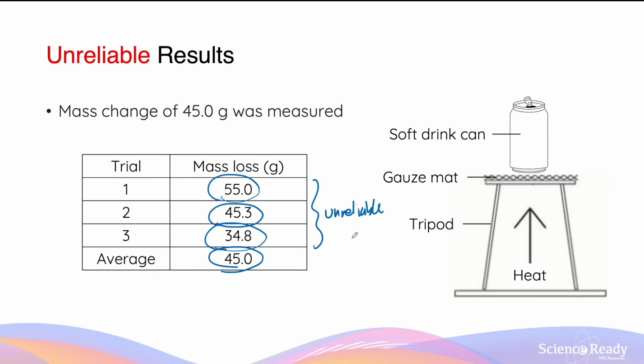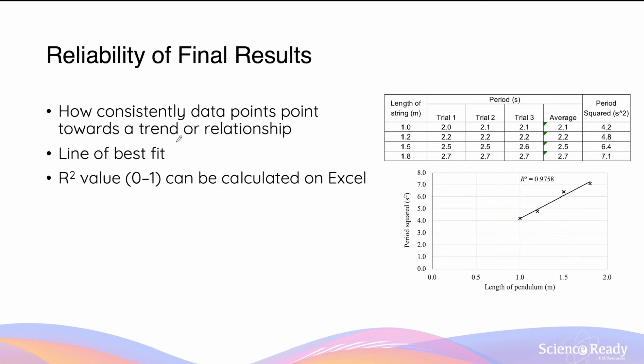This brings me to the point that when you repeat an experiment and find the average value, that does not mean you have reliable results. You need to assess each individual value in the set of data and compare whether that value is consistent, or whether it is far away from or close to the average value. In some experiments you can also assess the reliability of your final results.